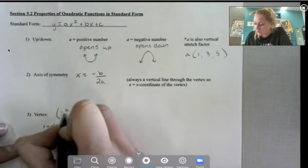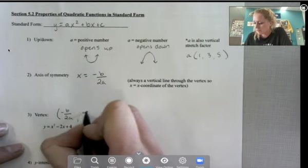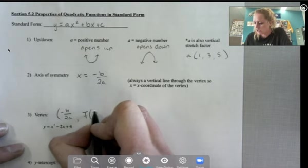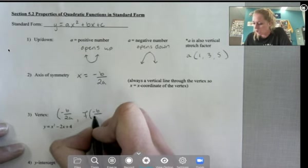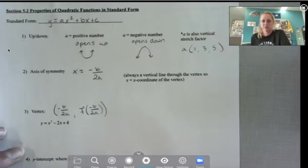So negative b over 2a is the x-coordinate. To get the y-coordinate, we have to plug it in. So I'm going to use function notation. We're going to find what is y when x is negative b over 2a.